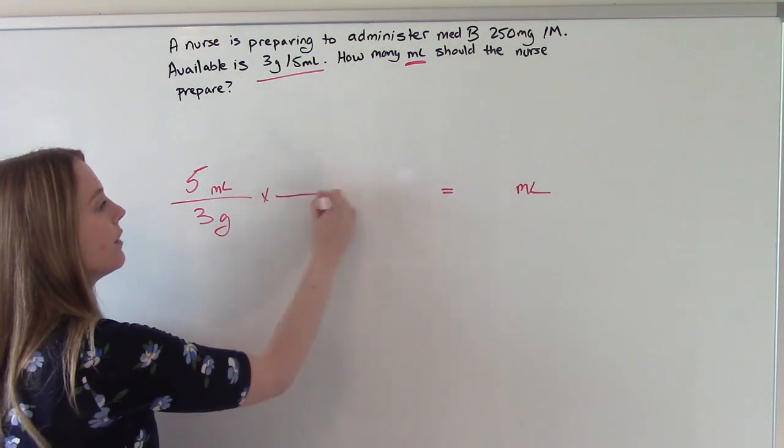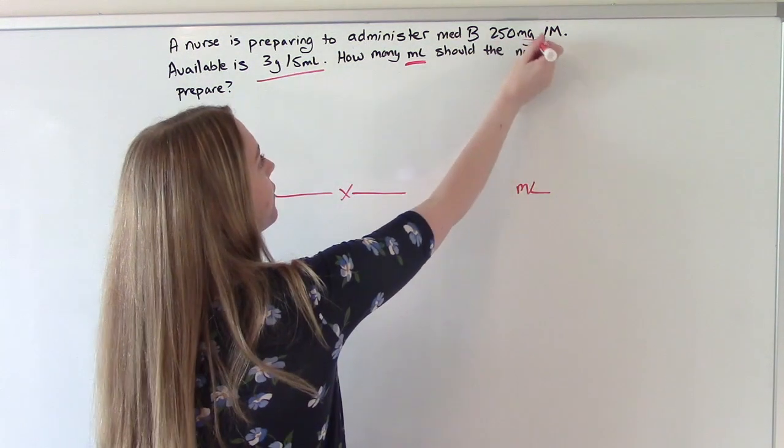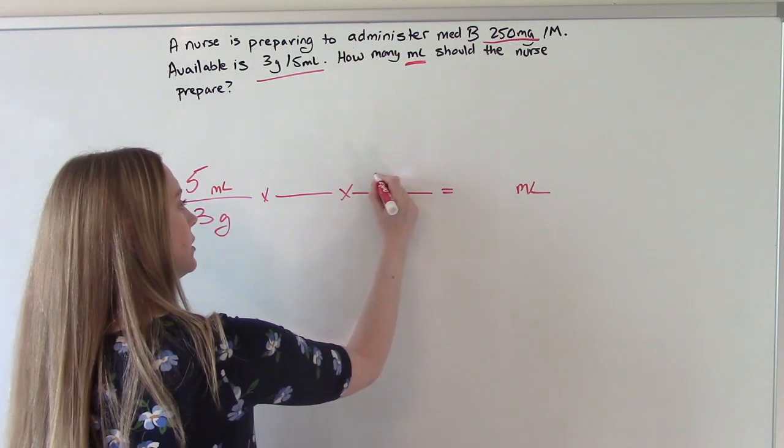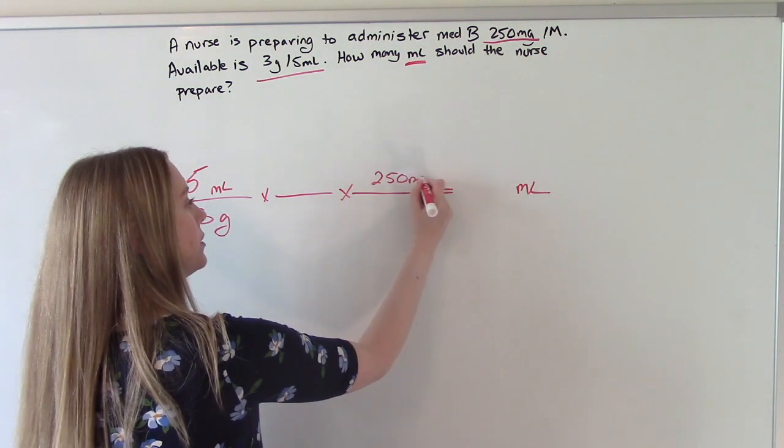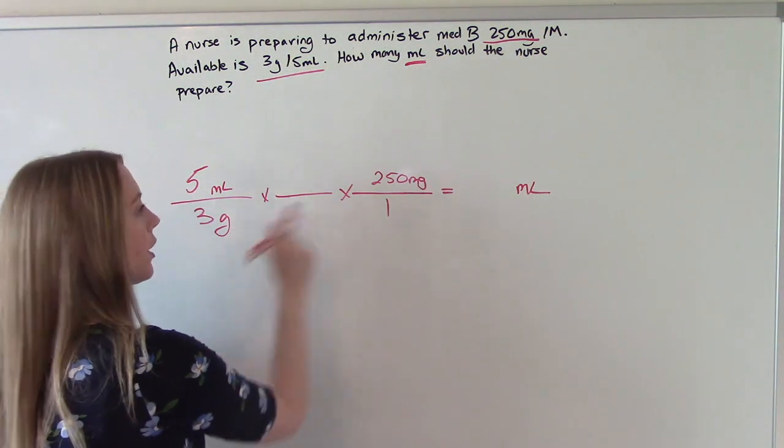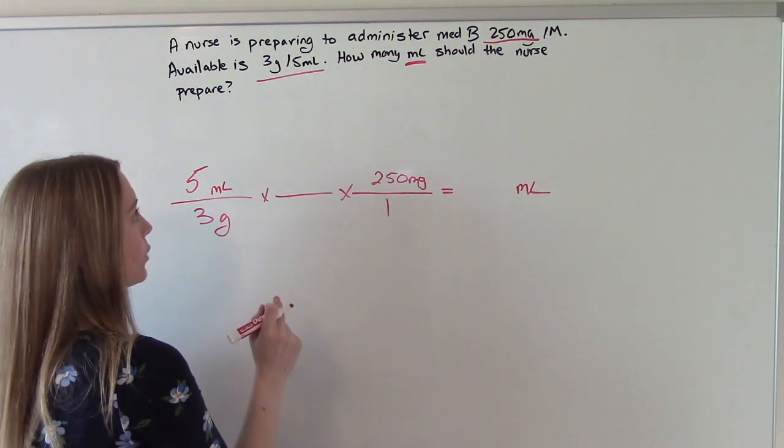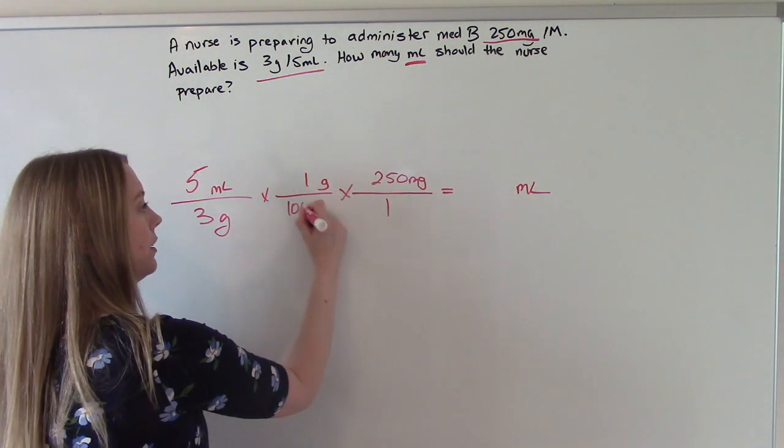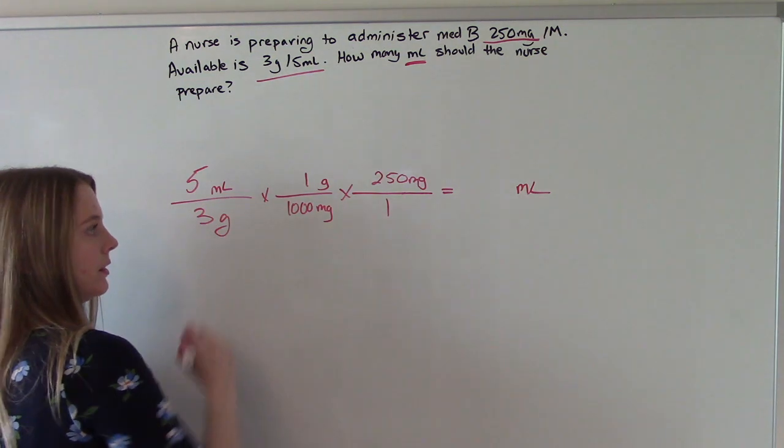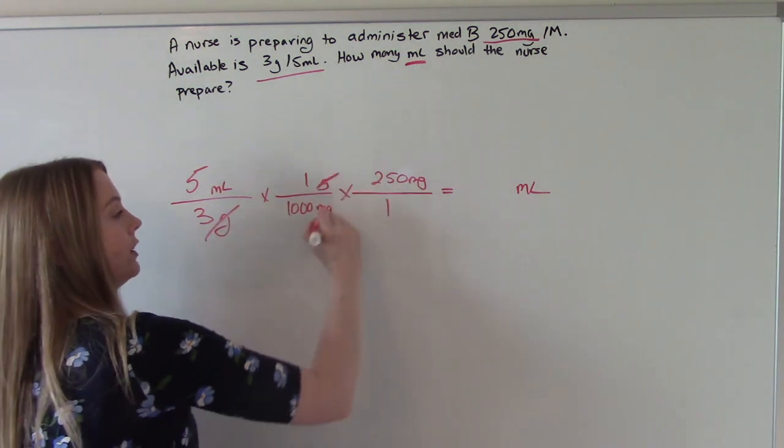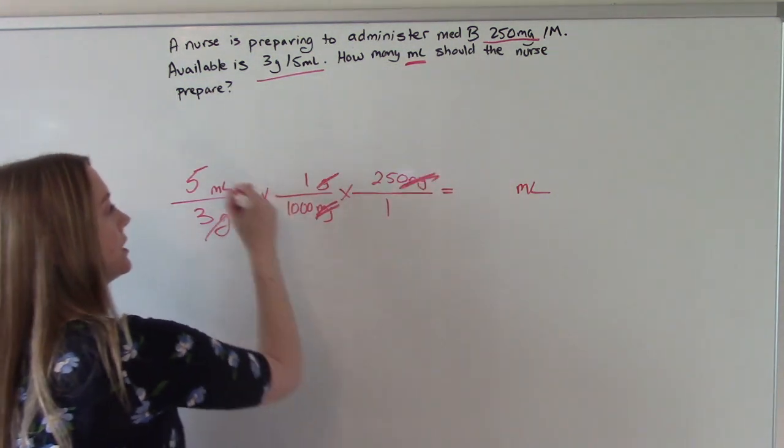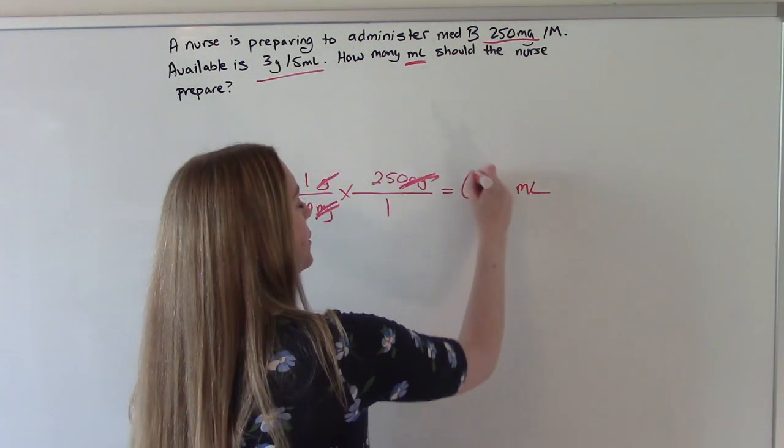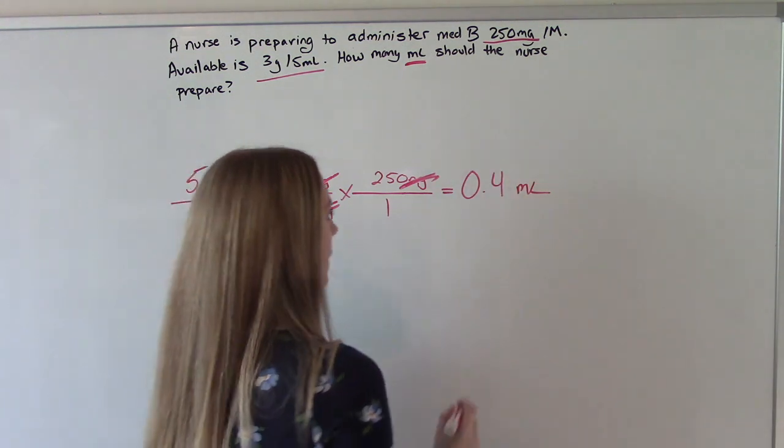And then what do we have available to us? 250 milligrams. 250 milligrams over 1. And then we need our converting factor of milligrams to grams. So 1 gram is 1000 milligrams. So the grams will cancel. The milligrams will cancel. This will leave us with only mLs. And then you punch it in your calculator, you do the math, and you get 0.4 mLs.